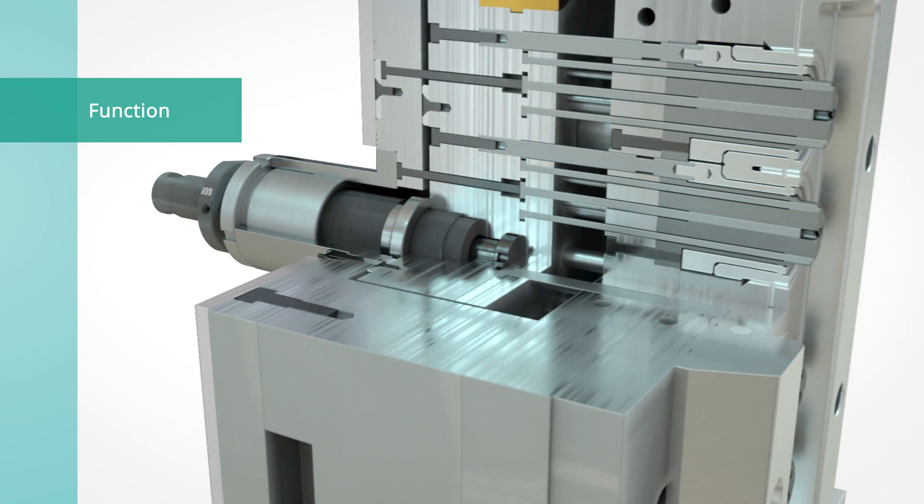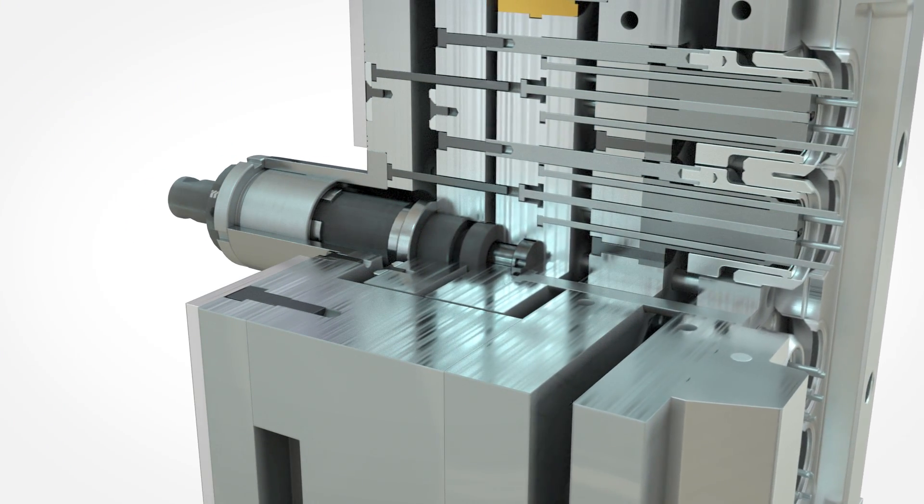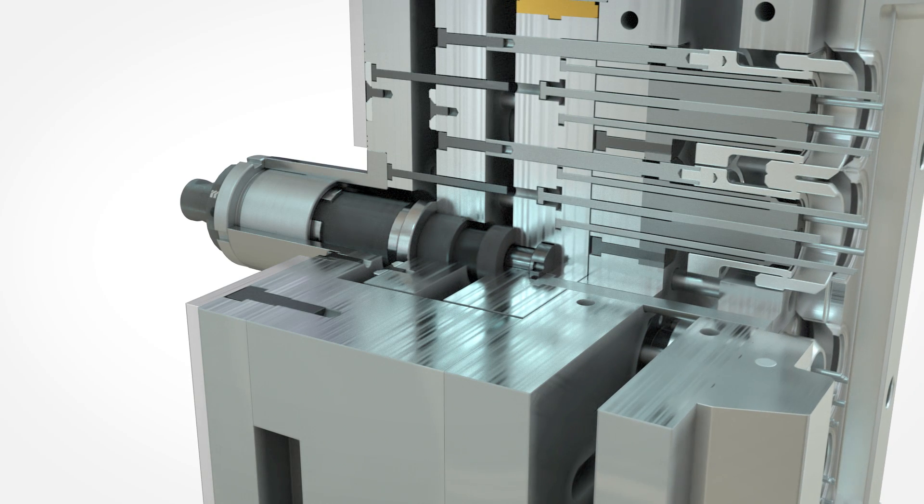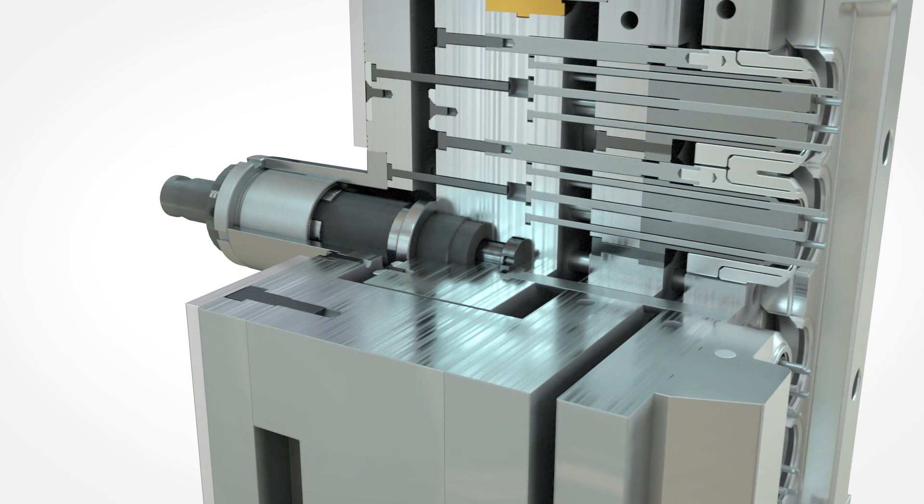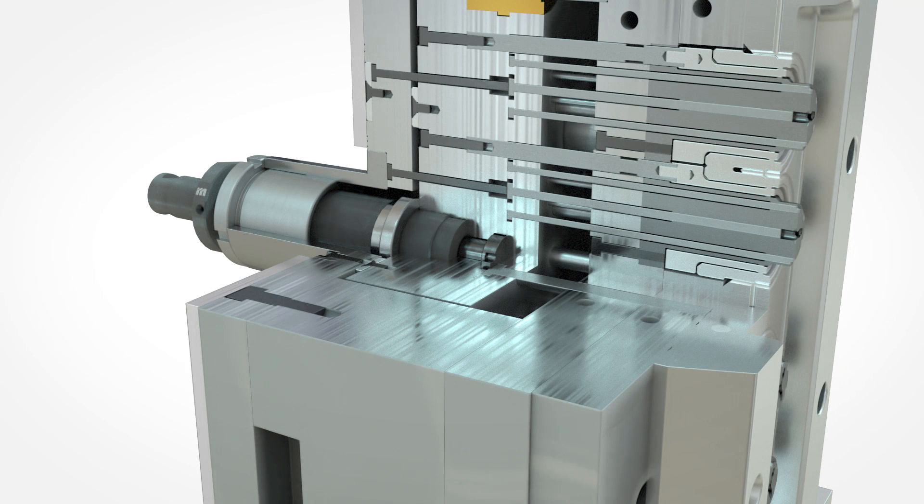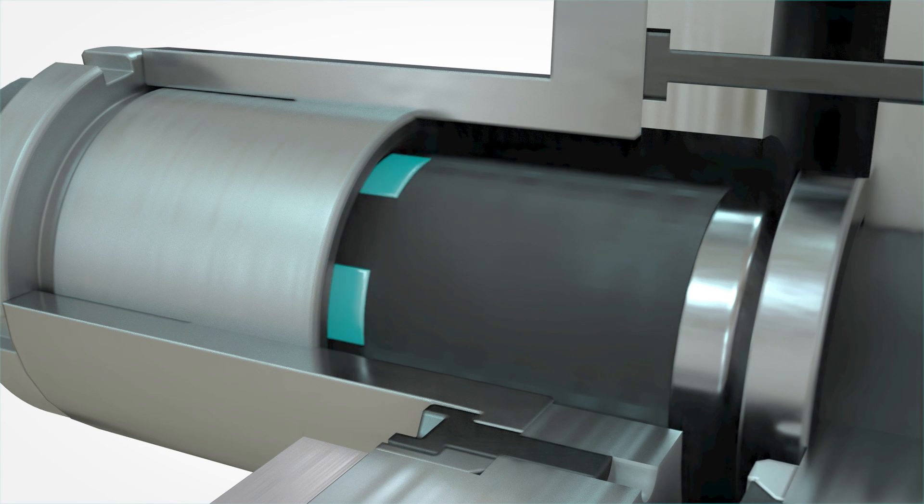During the demoulding process, both ejector sets move simultaneously in the direction of the fixed half. The back ejector set stops at a defined position and is locked by the switching segments.